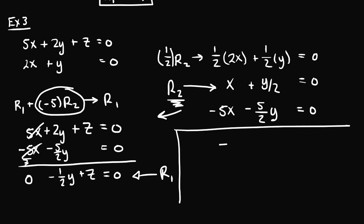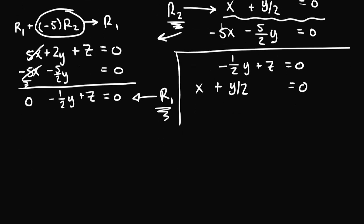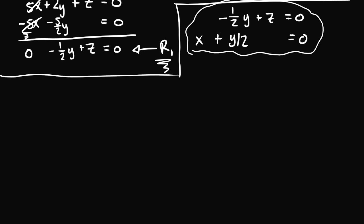The new system of linear equations is: r1 is negative one-half y plus z equals zero, and r2 is x plus y over two equals zero. We still have three unknown variables — x, y, and z — but only two equations. So we'll have to represent the solution set parametrically. We can choose parameters for unknown variables to represent any real number.